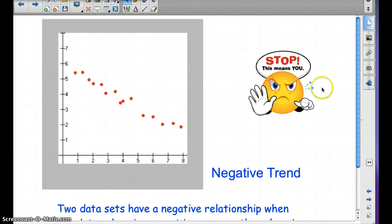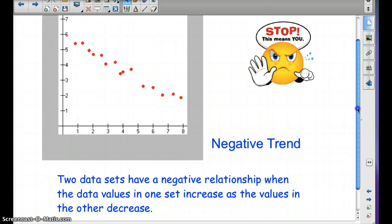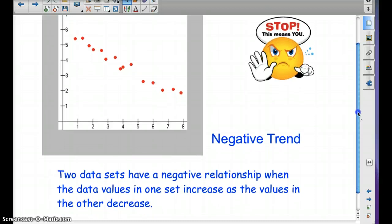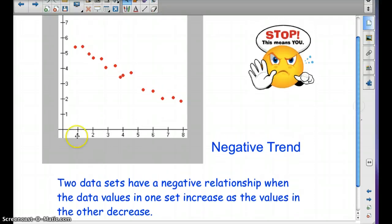A negative trend: two data sets have a negative relationship when the data values in one set increase as the other values decrease. Notice here our x values are going up, the y values are going down. We can see that trend.